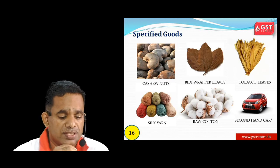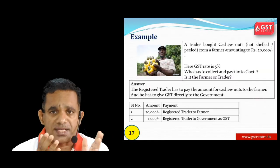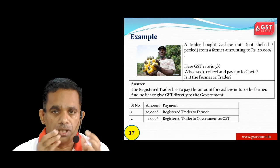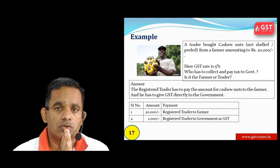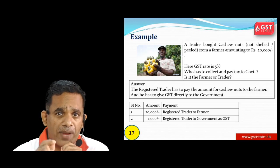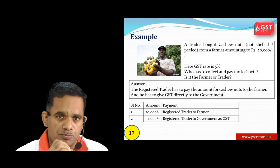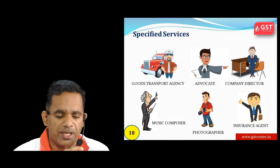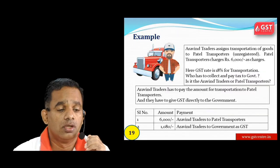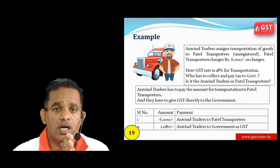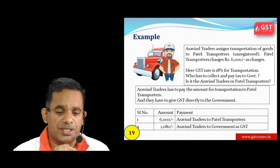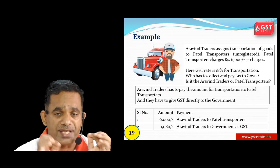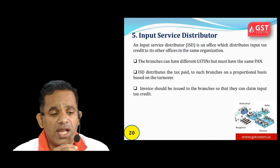Reverse charge is applicable on specific goods: cashew nuts, tobacco leaves, silk yarn, raw cotton, and second-hand cars. Example: a trader purchases cashew nuts from a farmer for Rs. 20,000. GST rate is 5%, so the trader pays Rs. 20,000 to the farmer and pays GST of 5% directly to the government. Specified services under reverse charge include: transport agency, company director, music composer, photographer, insurance agent. Example: a transporter provides transportation services to a company; the company pays 18% GST directly to the government.